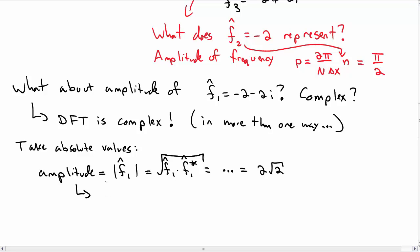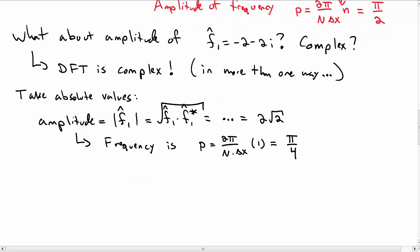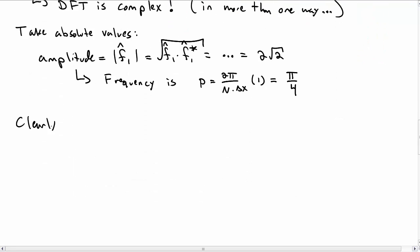So then this is the amplitude of the frequency given by p is 2 pi over big N delta x times N, and here is 1. So that's the amplitude of the frequency pi over 4. You can do the same thing for the other ones.